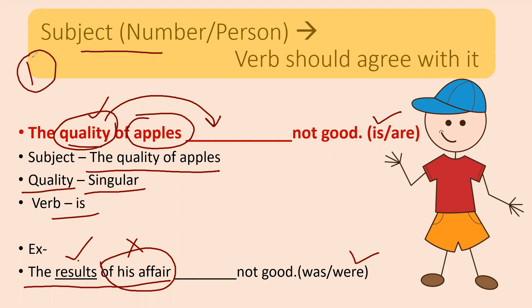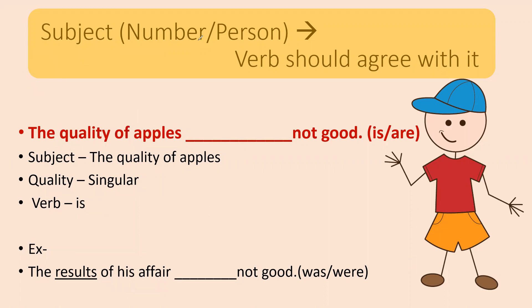So Rule Number One says: the verb must agree with the subject — if the subject is singular, the verb is singular; if the subject is plural, the verb is plural. The trick is: when the subject has an 'of' phrase, look at the noun before 'of' to determine singular or plural, and match the verb form to that noun.